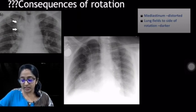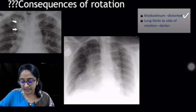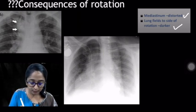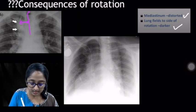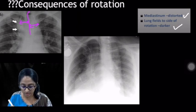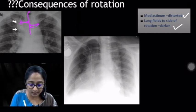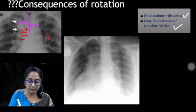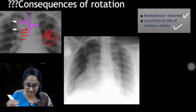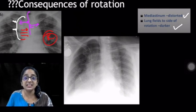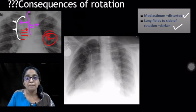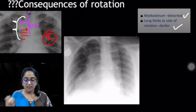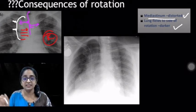What's the problem with rotation? Two things: the mediastinum will appear distorted, and the lung fields on the side of rotation will appear darker. In this example, the radiograph is rotated to the right, and you can see an added opacity in the right upper lung zone — these are distorted, magnified mediastinal vessels projecting into the lung fields and mimicking pathology. This is one of the drawbacks of a rotated film.